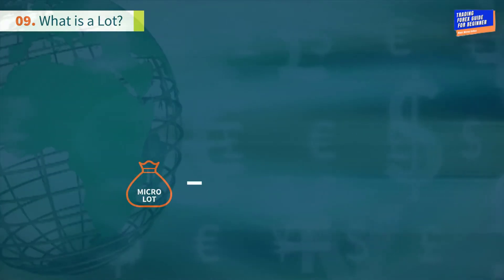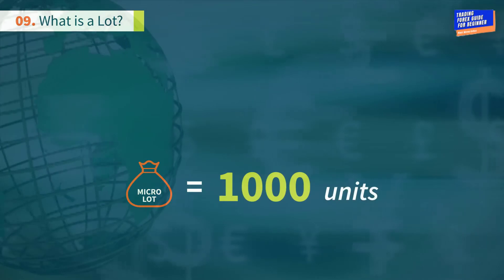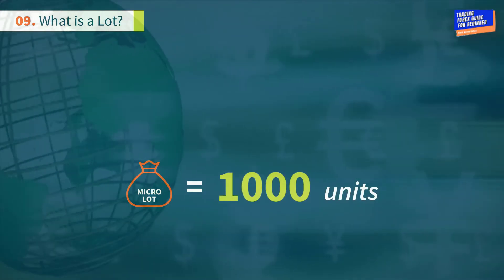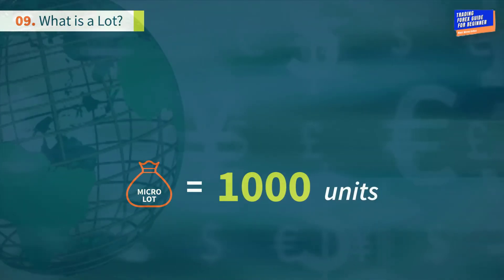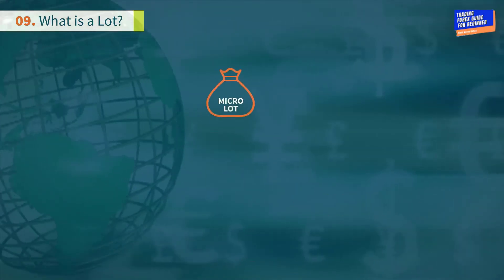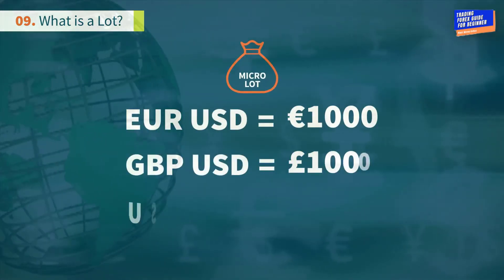One micro lot is equal to 1,000 units of the base currency. Here are a few examples.